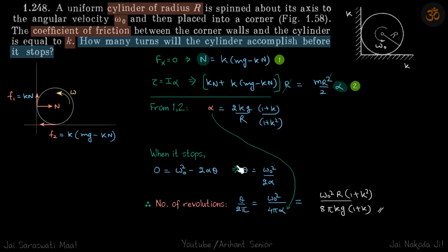So now we'll calculate theta and divide that by two pi to get our answer. So because alpha is a constant, we can write our equation of motion. So when it stops, final omega is zero is equal to omega not square minus two alpha theta.